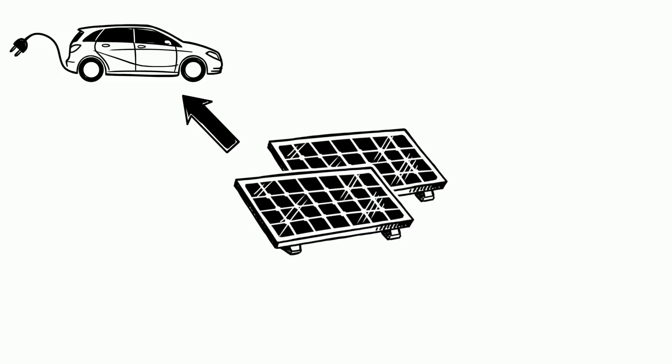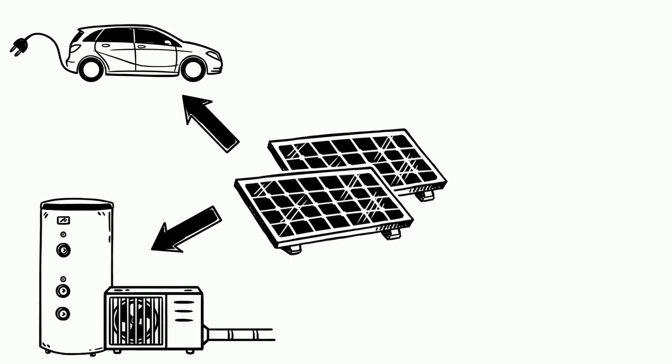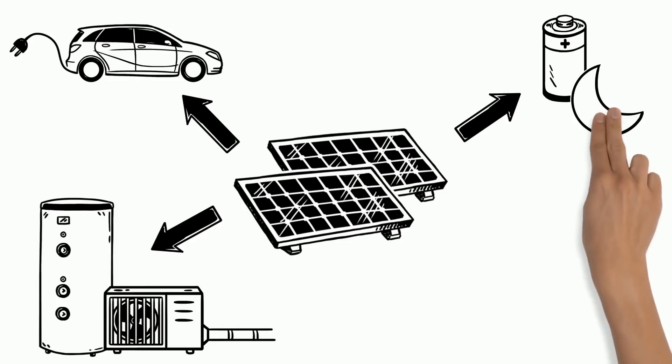For example, users can use solar power to recharge electric cars or operate heat pumps to heat their buildings. If the solar power is not consumed immediately, it can be stored and used when the sun is not shining.